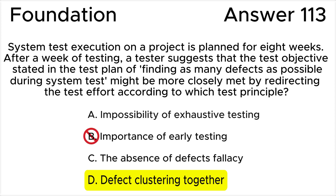Answer B is wrong because this principle emphasizes the need to begin testing early in a project according to testing principle 3, but does not provide guidance on redirecting testing efforts based on defects found. In addition, testing has already begun, so this principle does not apply here. Answer C is wrong because this principle highlights that testing cannot prove the absence of defects according to testing principle 7, but it does not guide the tester on where to focus efforts based on defects found.